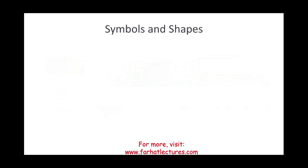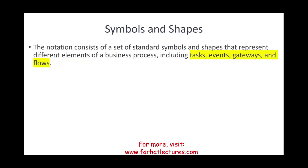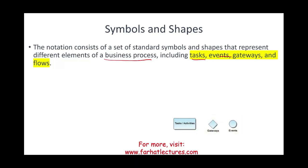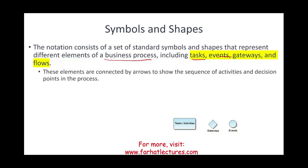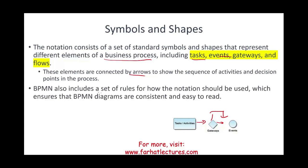BPMN uses standard symbols and shapes that represent different elements of a business process. They include tasks, events, gateways, and flows. A task or activity looks like a rectangle. The diamond is a gateway, and an event is represented by a circle — sometimes with a bold black border depending on where we are in the process. These elements are connected by arrows showing the sequence of activities and decision points. BPMN also includes sets of rules governing how those symbols are used, ensuring diagrams are consistent and easy to read.